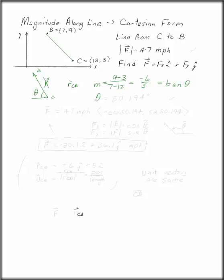To solve this, that angle has to be 50.194 degrees. Now we have a magnitude and a direction. We can find the Cartesian form.